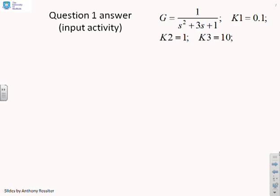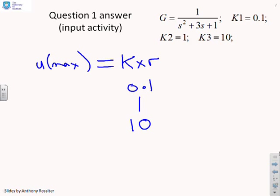What about input activity? Well, you'll notice from the previous tutorial sheet that we showed that U max is going to be equal to K times R. So in other words, U max is going to be either 0.1 or K equals 0.1 or 1 or 10. So if K is small, you have a small input. And if K is large, you have a large input, certainly in terms of transients.